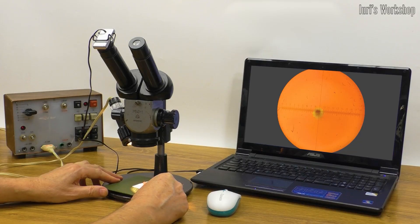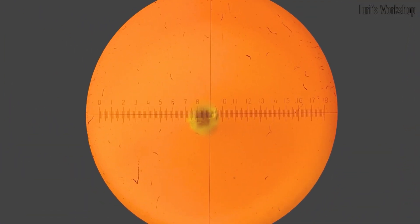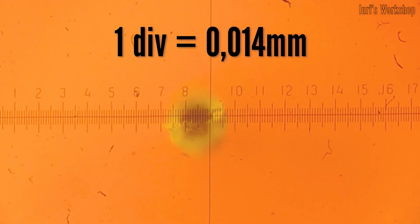I suggest you use a needle from an insulin syringe as the nozzle. The diameter of the hole in this type of needle is only 15 hundredths of a millimeter.